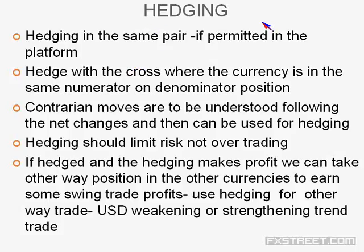There is another opportunity: hedging can be done with a cross currency pair. When hedging with crosses, you must choose a currency in the same numerator or denominator position. If the hedging facility is not available on your platform and you have a buy position in Euro, you can hedge with a Euro/GBP position because Euro is the numerator in both Euro/USD and Euro/GBP. That way you can take a sell position in Euro/GBP to hedge.